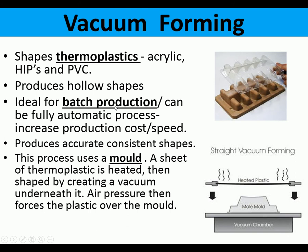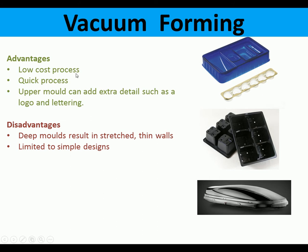Vacuum forming shapes thermoplastics, typically acrylic, HIPS, and PVC. It produces hollow shapes and is ideal for batch or mass production. It can be an automated process using a mould, where the plastic is heated over the mould. The advantages are it's a low cost, quick process, and the upper mould can add extra details such as logos and lettering. The disadvantage is that deep moulds stretch the walls and the shapes are limited to simple designs.